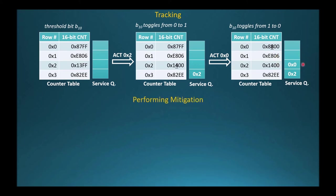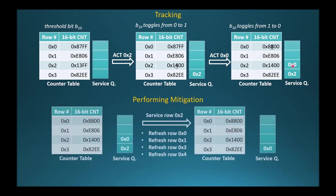Next, I will show how Panopticon performs the mitigation. To service row 0x2, the DRAM device must refresh all potential victim rows. In this example, we assume the aggressor row can affect up to 4 victims. So we refresh victim rows 0x0, 0x1, 0x3, 0x4, and dequeue the aggressor row 0x2 from the service queue. The service queue now still has one more entry, row address 0x0, which has not yet been mitigated.